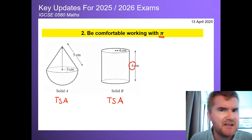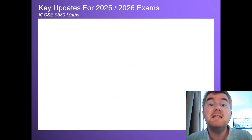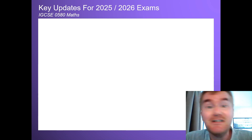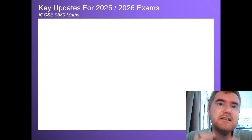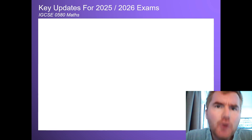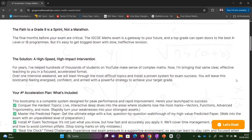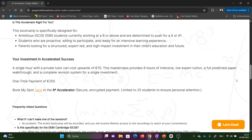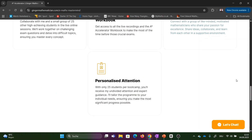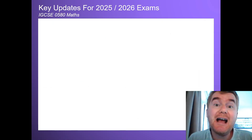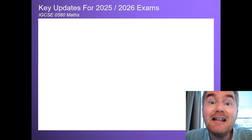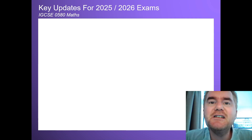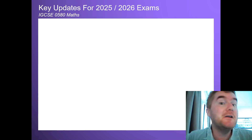That leads into my third tip, but before I get there, I want to talk about the new A-star Accelerator Bootcamp I'm launching for the October exams. It's an eight-hour intensive course over a weekend — four hours on Saturday and four hours on Sunday — really to get you confident in smashing the A-star, not just the B-grade or the A-grade, but A-star. If you're interested, you can sign up via the link in the description. The next bootcamp will be on October the 4th and October the 5th, right before your IGCSE 0580 exam.